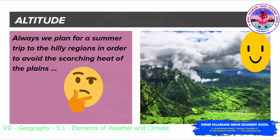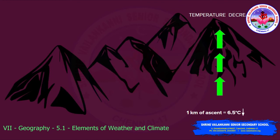The next factor is altitude. We often plan summer trips to hilly regions to avoid the scorching heat of the plains. Even though the hills are closer to the sun than the flat plains, the temperature is cooler there. This is because temperature decreases with increase in altitude. Altitude is the height in reference to the planetary surface. For every 1 kilometer of ascent, there is a decrease of 6.5 degrees Celsius.